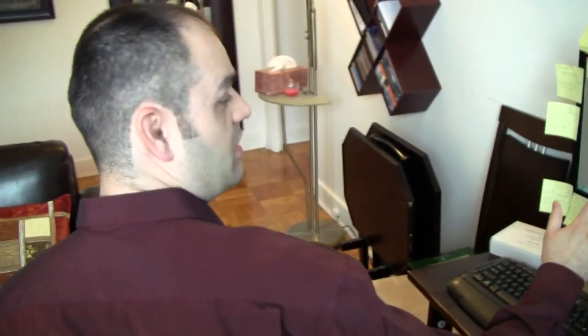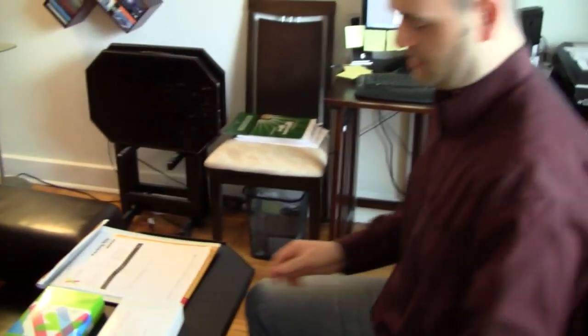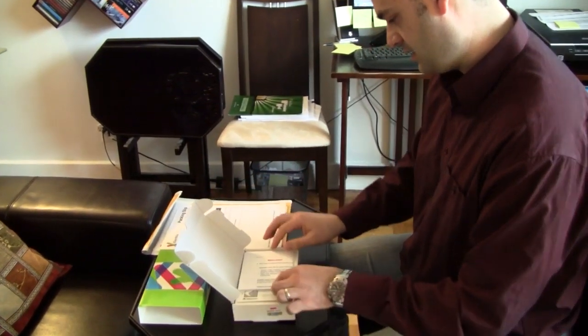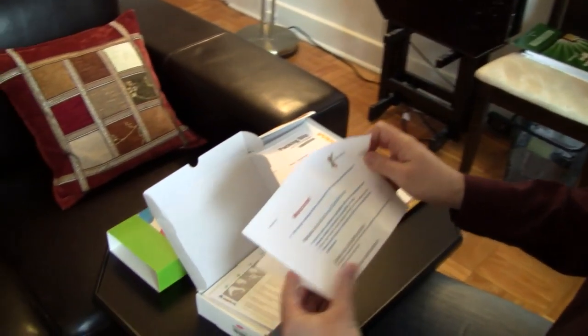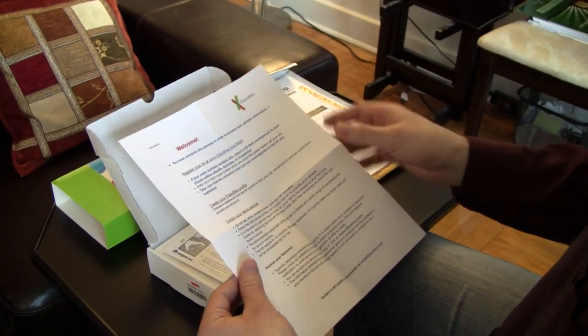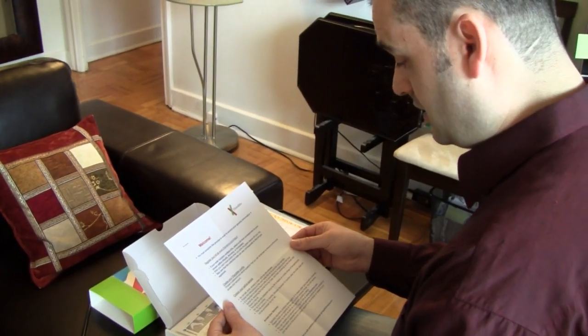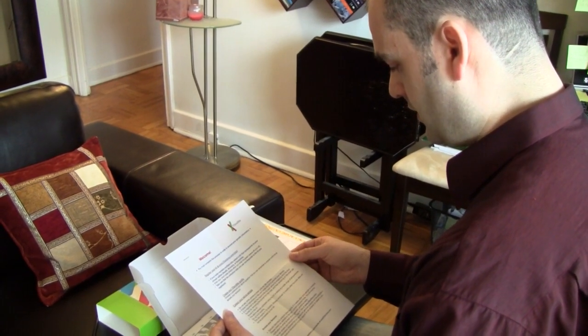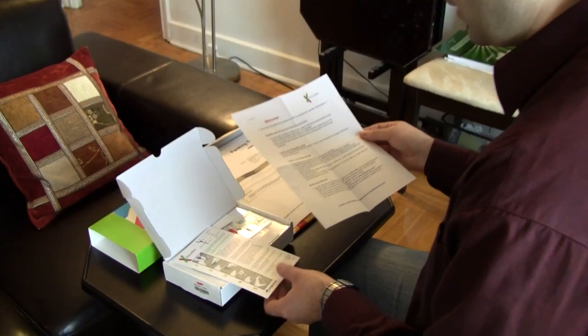I guess we have to go on with the test itself. Let's see how hard this is. First of all, warning: you must complete this process in order to access your genetic information. Register your kit - we already did that. Create your profile - I already did that. So collect your saliva sample. Do not eat, drink, smoke, or chew gum for 30 minutes. Okay, that's done. Follow the instructions on the card inside the kit to provide your sample. This is the card right here.